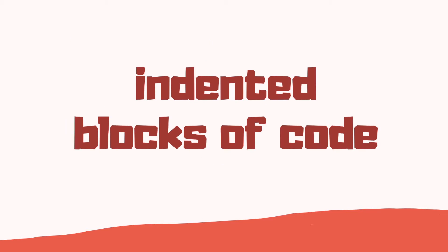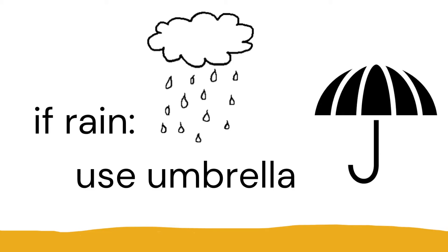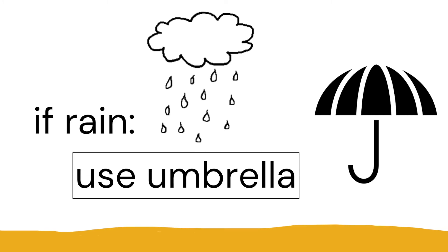Let's start off looking at the indentation of blocks of code. Here we have a simple if statement — if it's raining, use an umbrella. The 'use umbrella' is a block of code and it has an indentation — a space between the beginning of the line and the beginning of the code. So we know that block is part of the if statement.